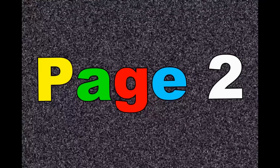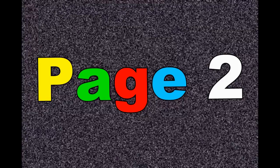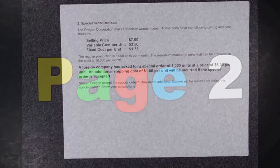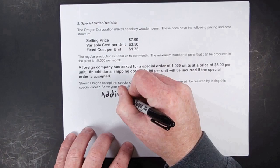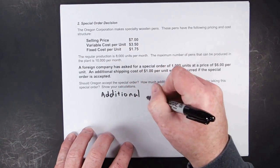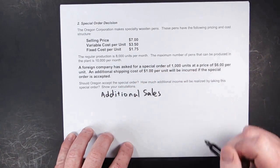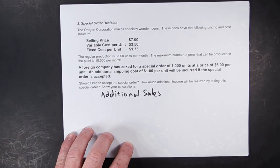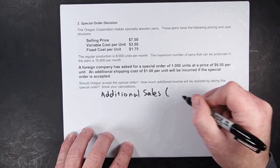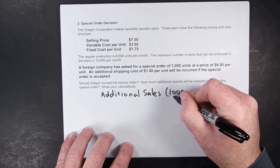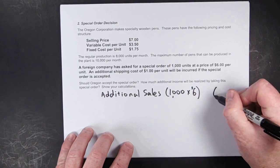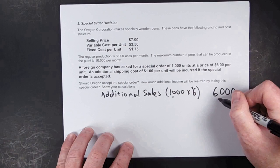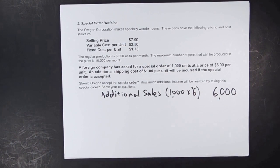Let's take a look at page two — you can try it on your own. On page two we have a very similar problem. We're going to calculate additional sales: they want 1,000 units and they want a price of $6 each. In other words, they don't want to pay our regular price of $7 — they want $6 because they're making a large order of 1,000 units.